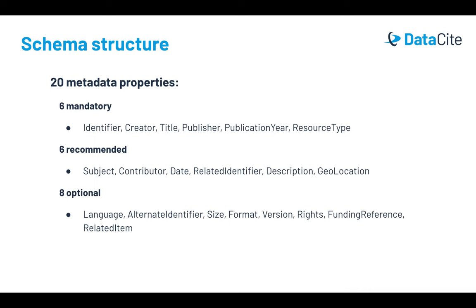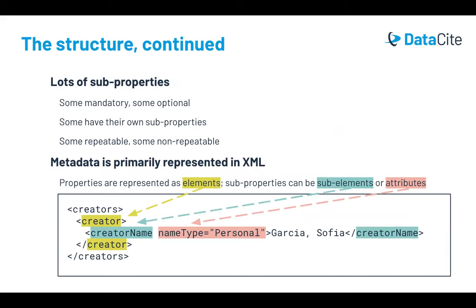Six properties are recommended, which means they typically apply and should be included wherever possible. And eight are optional, which means they don't always apply but should still be included when available. Many of these properties have subproperties, and like the 20 top-level properties, these subproperties can be mandatory or optional. Some have their own subproperties, and some are repeatable, while some are not.